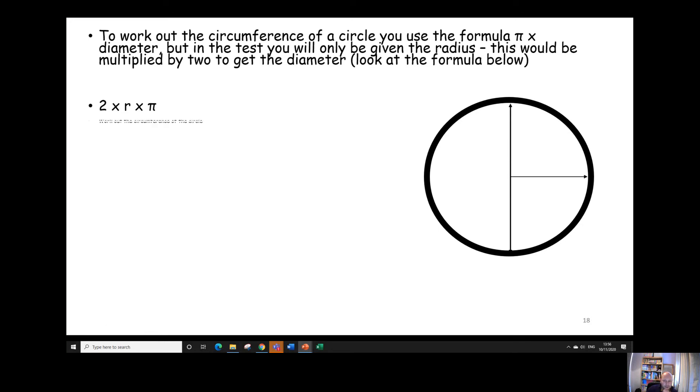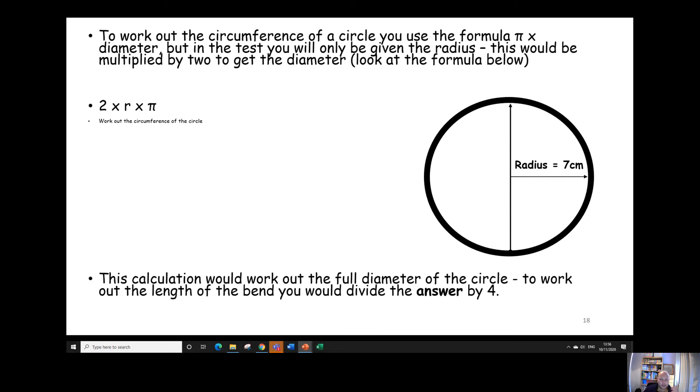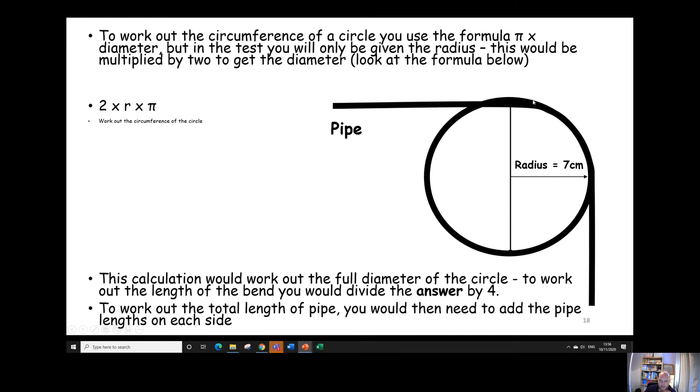So 2 times the radius times by pi. So if we, for example, had a radius of 7 centimetres or 70 mil, we'd times that by 2, which would give us 14 centimetres, times it by pi. And that would get the total circumference of this circle here. We'd then divide that answer by 4, which would get the length of a 90 degree bend, like you can see just here. To work out the total length of pipe, you'd then need to add any extra pipe lengths on each side.